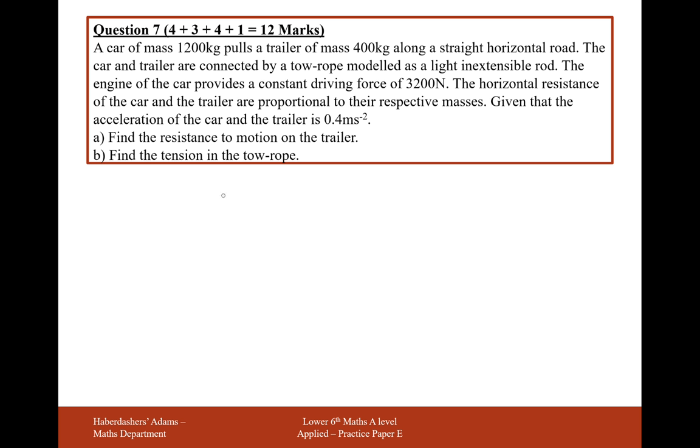A car with a mass of 1,200 kilograms, bear with me while I draw my car. I always prefer to draw a diagram when I've got these sorts of questions. It's pulling a trailer with a mass of 400 kilograms along a straight horizontal road. The car and the trailer are connected by a tow rope, modelled as an inextensible rod.